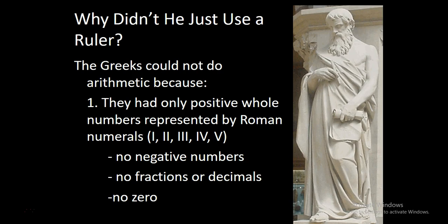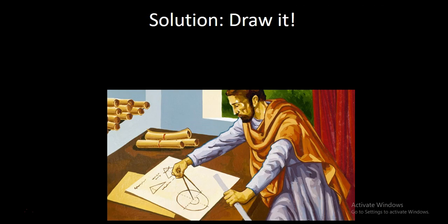There are no decimals or fractions in Roman numerals. There's no decimal there, there's no negative numbers, there's not even a zero. So because they couldn't do the arithmetic to come to the answer, what was necessary was to draw the answers out. You could solve mathematical problems graphically.